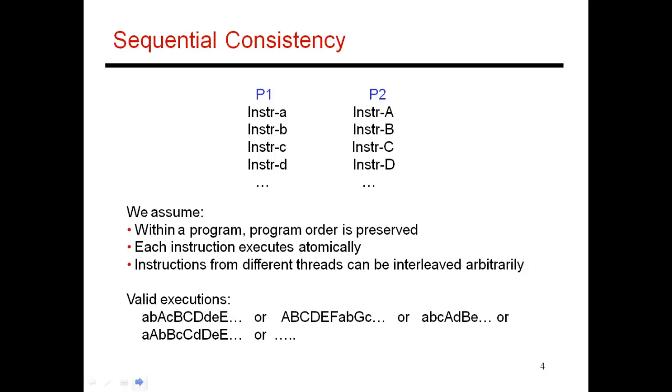So this model, which I just described as sequential consistency, is something that we all usually assume when we reason about a program. So we assume that within a program, I'm not going to do any reordering of instructions. Then I'm going to assume that every instruction finishes to completion before I start the next. And as I said, I'm going to assume that instructions from different threads could be interleaved arbitrarily. So for example, if P1 is executing instructions with small letters a, b, c, d, and P2 is executing instructions with capital letters A, B, C, D, the next instruction to happen in any given cycle could be picked from either P1 or P2. So these examples over here are all valid executions of this multi-threaded program.